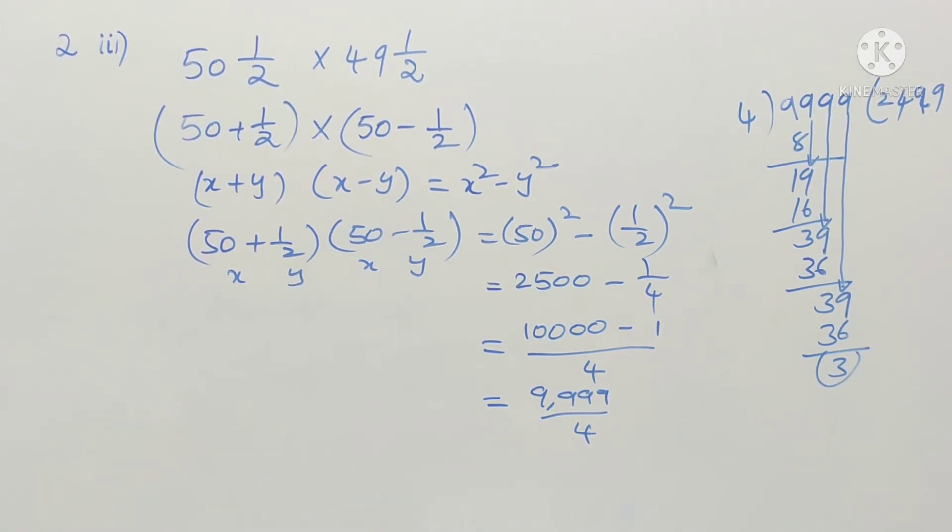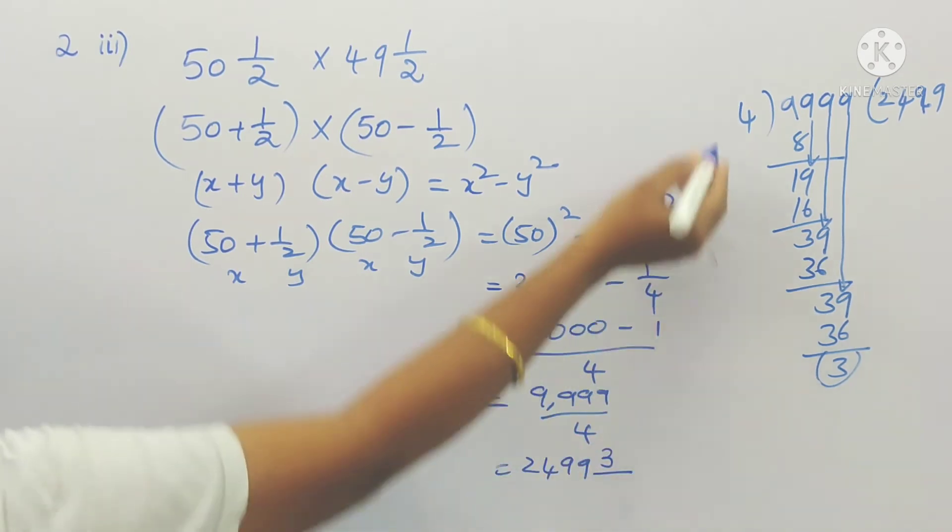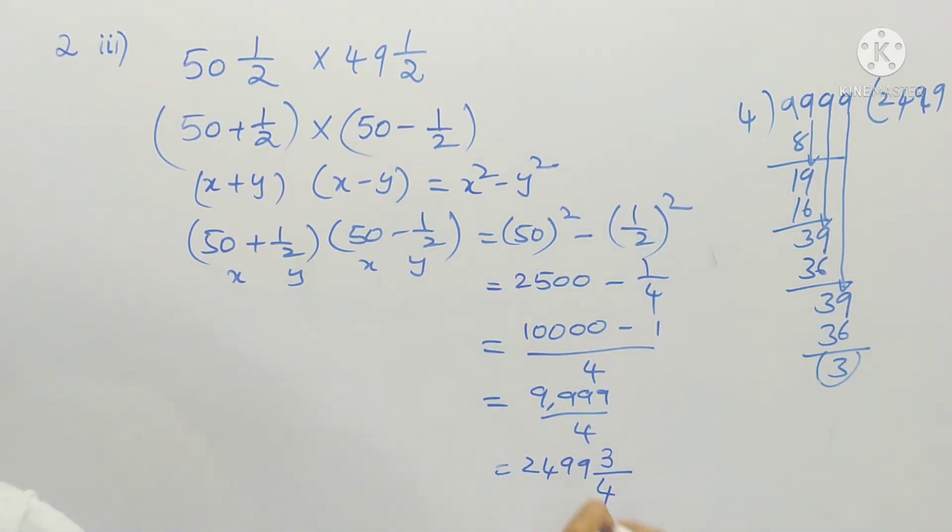So if you convert this fraction into mixed fraction, it will be, so what is the quotient here? 2499 and remainder 3 divided by 4. So therefore 50 half into 49 half is equal to 2499 and 3 by 4.